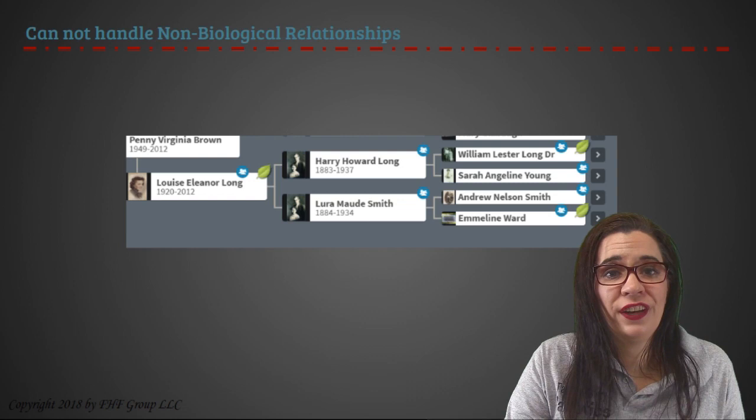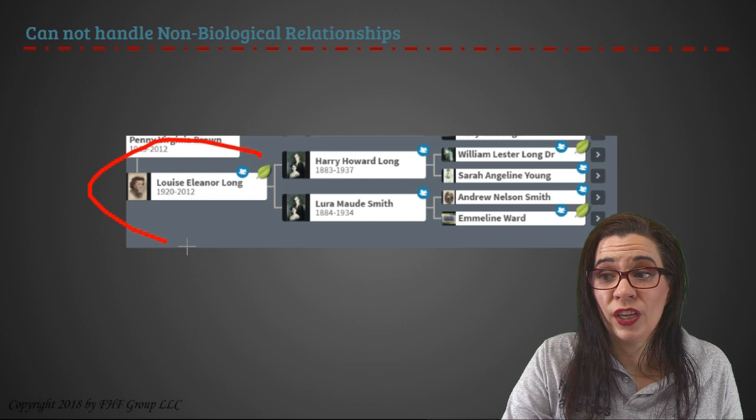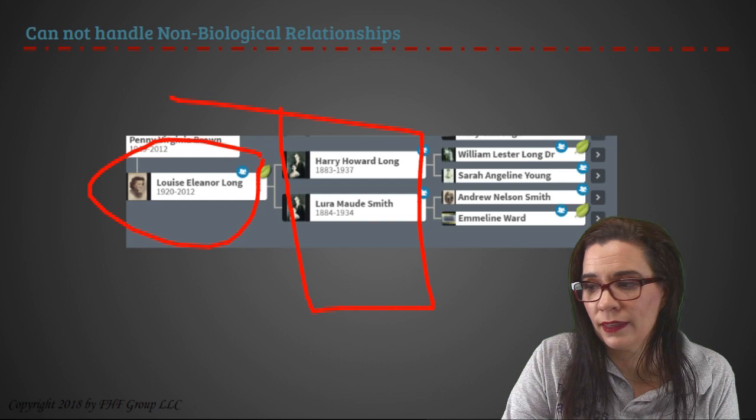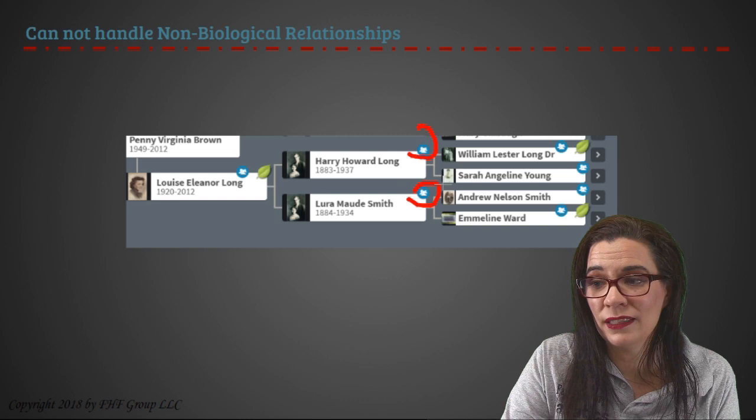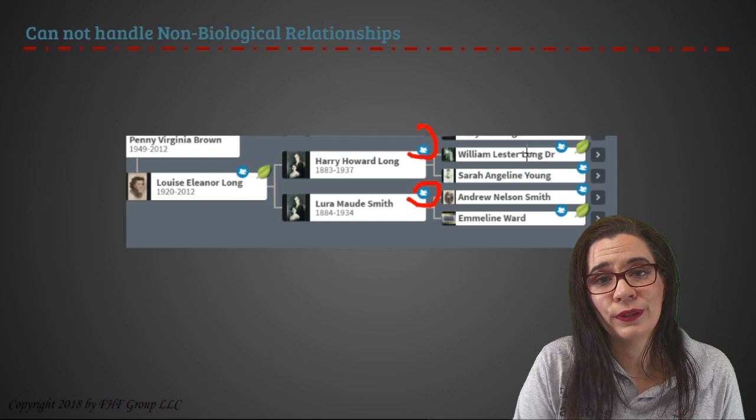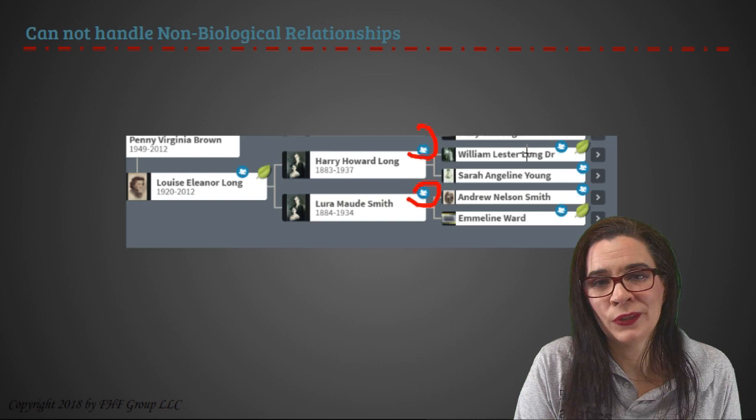As such, you're going to have situations like this one. In my tree, I have my grandmother, who was adopted by Harry and Laura Maude Smith. Ancestry ThruLines, as evidenced by these little icons, is trying to tell me that they have genetic ThruLines for my adopted family. It doesn't really work that well.